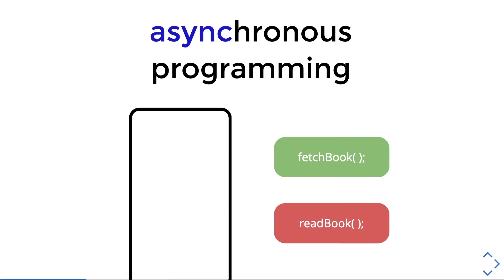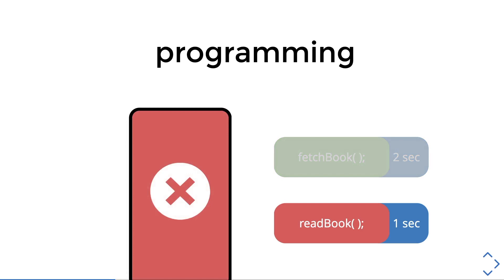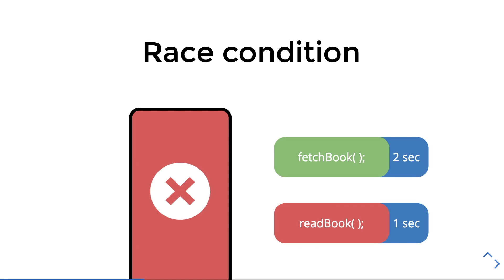These two functions take an average of two seconds and one second to finish executing respectively. If you were to just do normal programming, which one do you think will execute first — the fetch book function or the read book function? If you said fetch book function, you are wrong. It is actually the read book function, because it only takes one second while fetch book takes two seconds. Even after fetch book finishes, there is still an error in your app. This is typically called a race condition, where execution is not what we expected and these cause bugs.